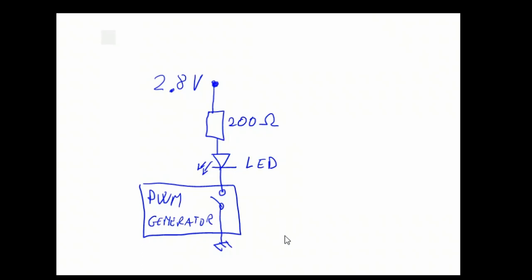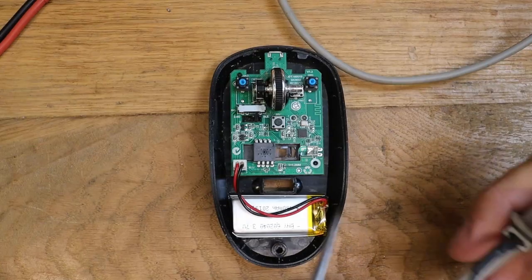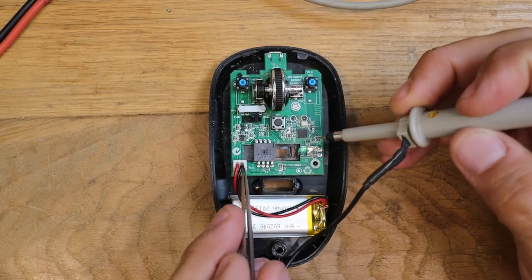This is a simplified schematic. The PWM generator is providing pulses to the LED, and the current is limited only by this 200-ohm resistor. Let's identify the schematic on the real mouse.